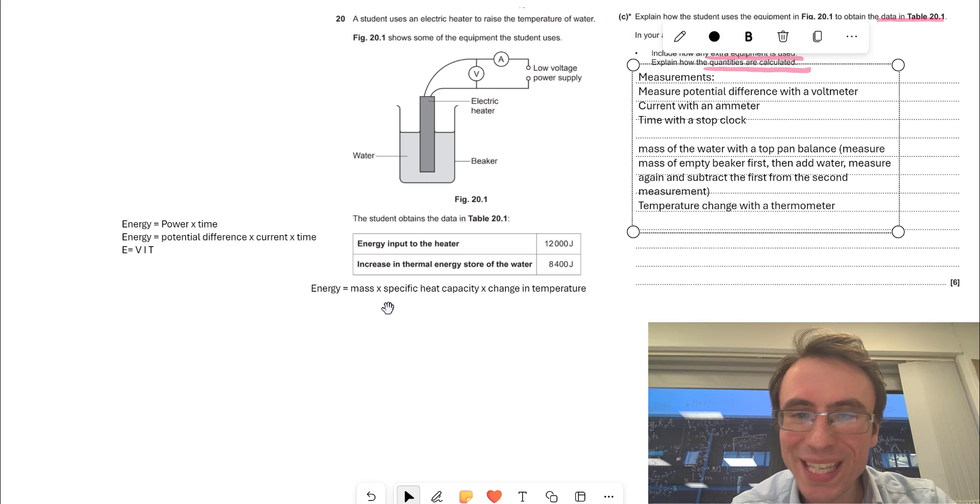The equation for the increase in thermal energy is just the specific heat capacity equation, which is mass times specific heat capacity, which is known for water, multiplied by the change in temperature. Okay, now out of these, we'll need to measure the mass.